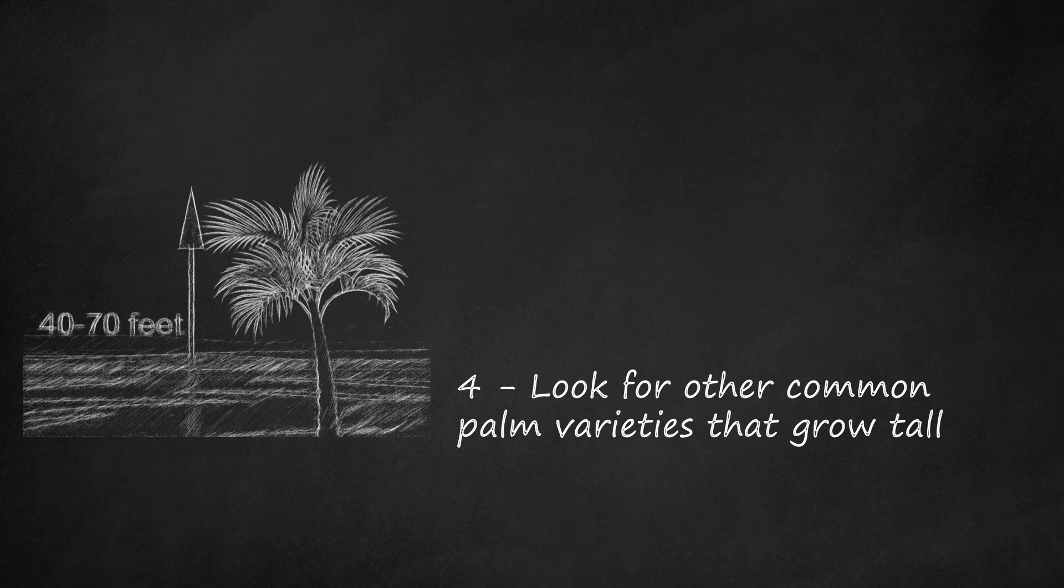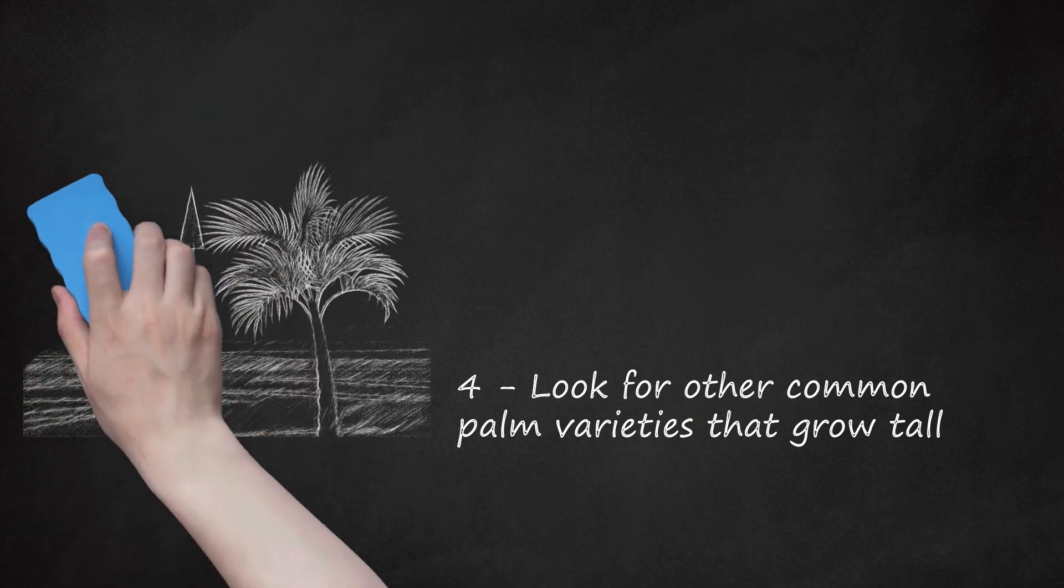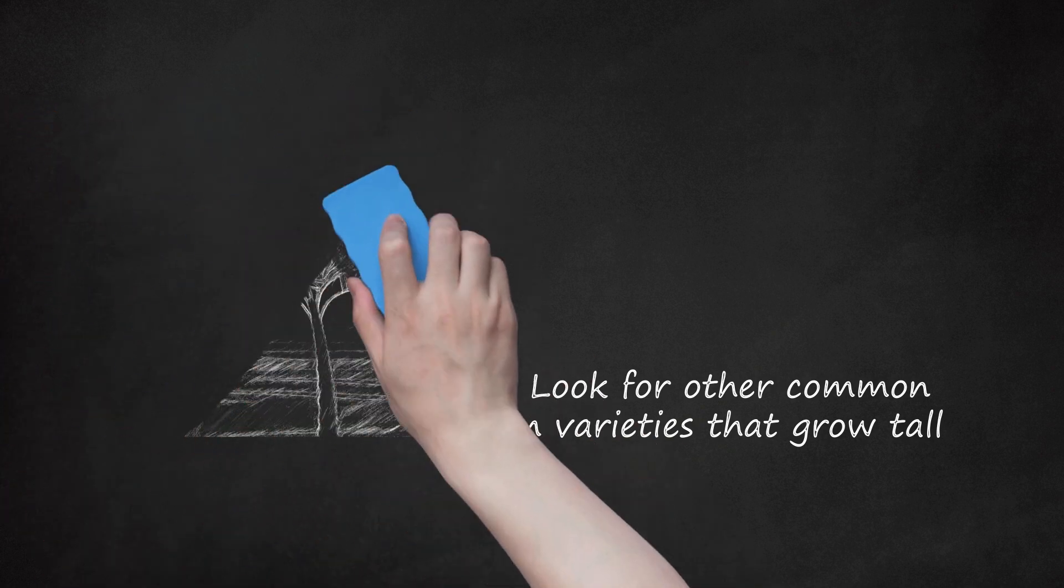Royal palms grow relatively quickly to heights up to 70 feet (21 meters). Their trunks are singular, gray, and marked with the scars of old fronds. The fronds are pinnate, dark green, and may be as long as 10 feet (3 meters).